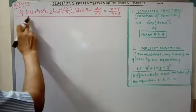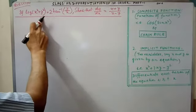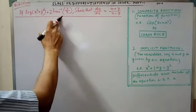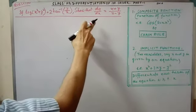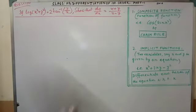That is, if log x square plus y square equal to 2 tan inverse y by x, so that dy by dx equal to x plus y by x minus y.